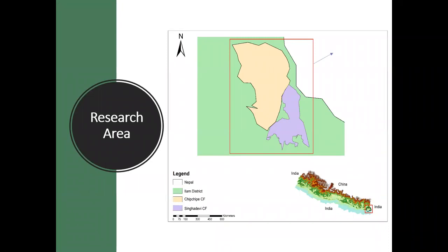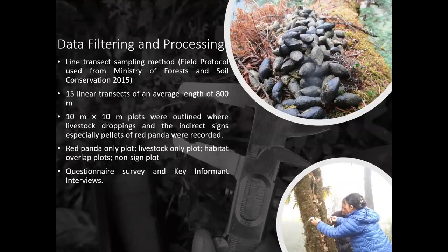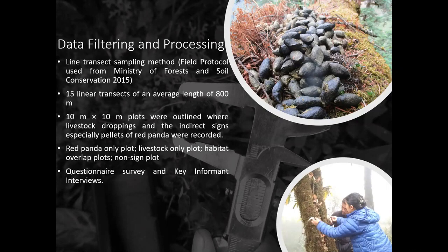The specific study site includes two community forests of Ilam district of Eastern Nepal. The line transect sampling method was used, following field protocol from the Ministry of Forest and Soil Conservation. In total, 15 linear transects of an average length of 800 meters were delineated. In these transects, 10 by 10 meter plots were demarcated where livestock droppings and red panda indirect evidence were recorded. Based on the presence of indirect signs, plots were distinguished as red panda only plots, livestock only plots, habitat overlap plots, and non-sign plots. Questionnaire surveys and key informant interviews were conducted for the locals.